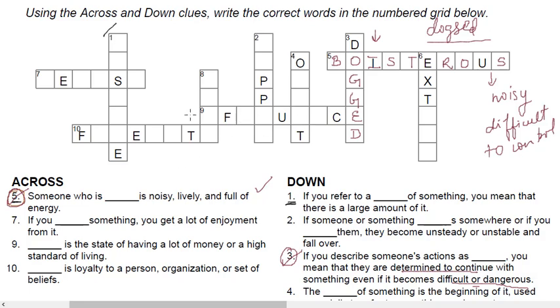Now, from this, if you look at the ninth one, now you can arrive because you have almost 50% of the words. Ninth says, dash is the state of having a lot of money or a high standard of living. So dash is the state of having a lot of money or a high standard of living. So what can it be? So it says here, that you have F, and so affluence is the word A-F-F-L-U-E-N-C-E, affluence.